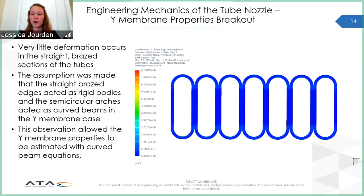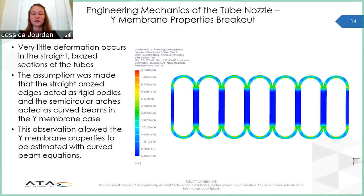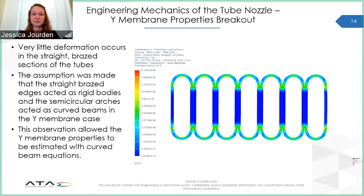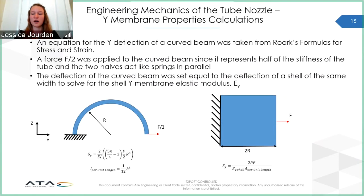This shows that the Y membrane properties can be estimated using curved beam equations. To solve for the Y membrane shell stiffness, the Y deformation of a curved beam experiencing a load of F over 2 was set equal to the deformation of a rectangular element of the same width experiencing a load F. F over 2 was used for the curved beam because one curved tube side provides half of the stiffness of the tube. From this equation, we can solve for the shell Y membrane elastic modulus, E sub Y.